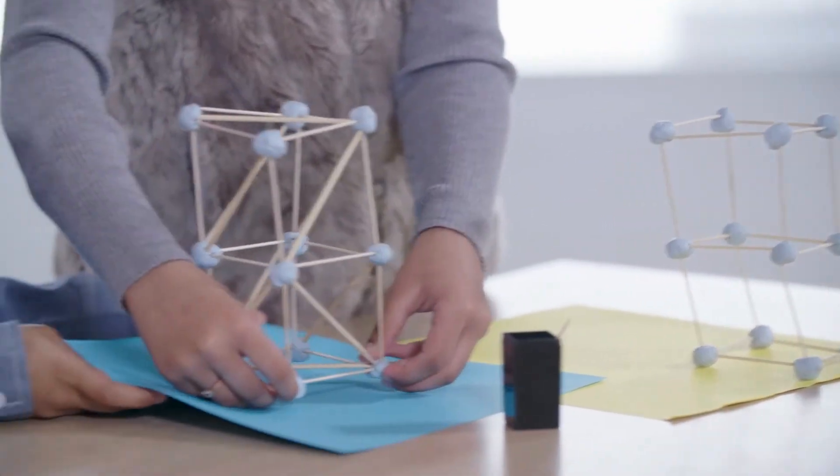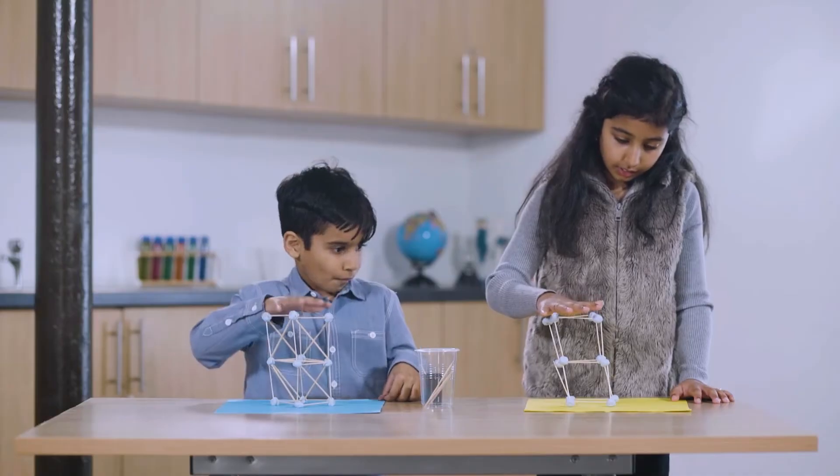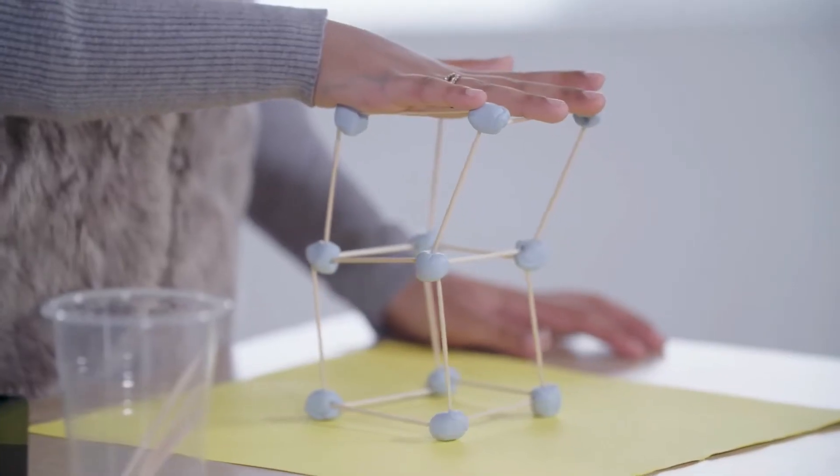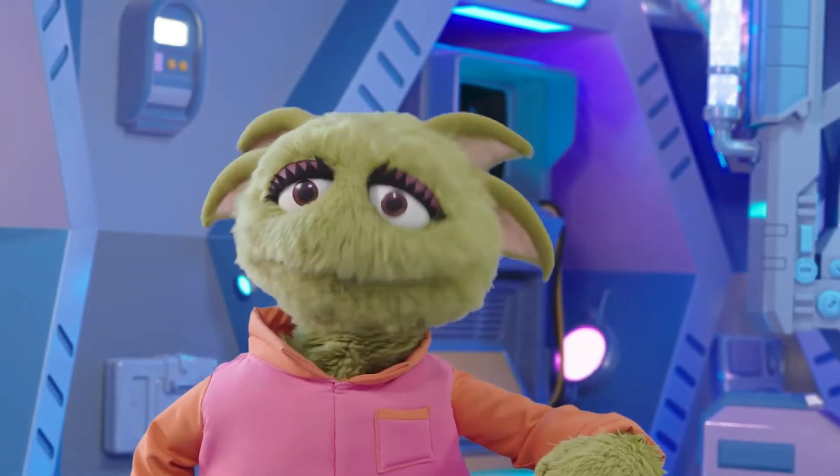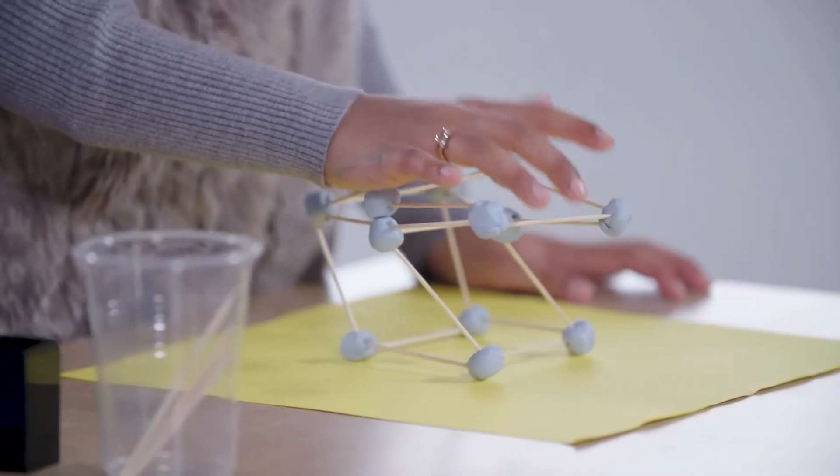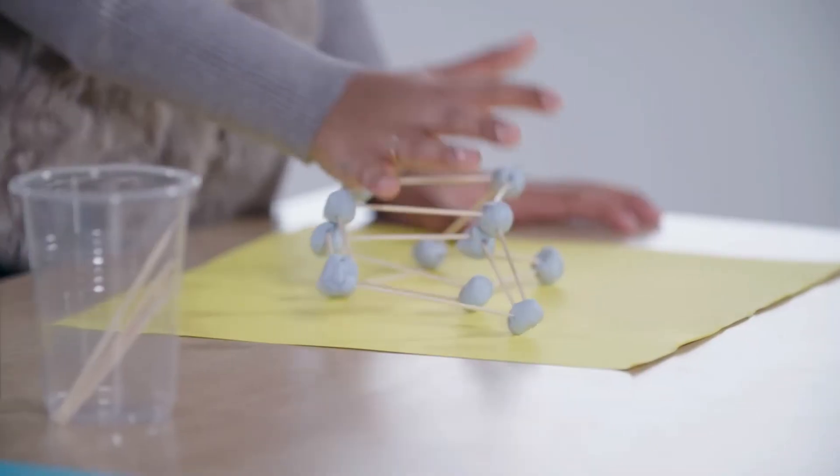Time to test which is stronger. First, Iman is going to push down on the one built with squares. Oh, this doesn't look good. The square tower has collapsed just like mine did. This one is not that strong. It buckled.